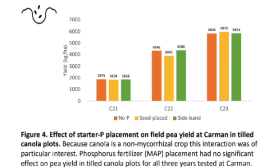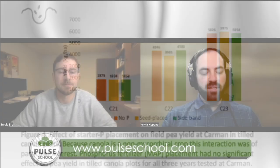What about starter phosphorus — any significant differences in yields as a result of that treatment? So I tried no phosphorus application, starter phosphorus that was seed placed, and a starter phosphorus that was sidebanded. These applications were at 20 pounds of phosphorus per acre. Based on the preliminary results at Carmen, there was no significant effects between these three phosphorus applications.